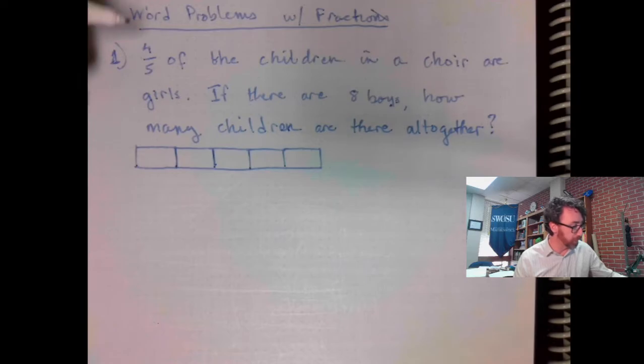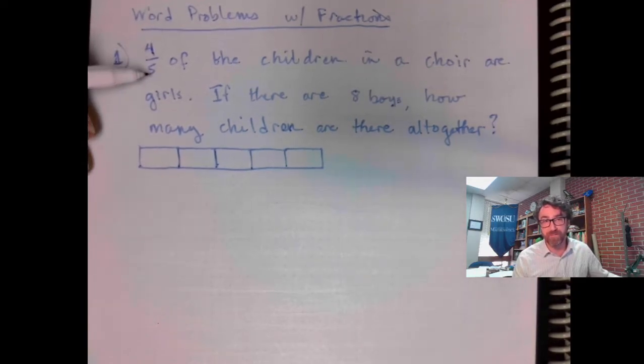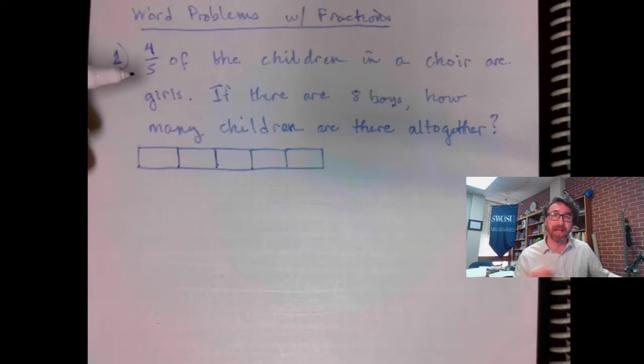The reason I'm doing that is because my fraction here is four-fifths. The denominator of the fraction I'm dealing with tells me how many pieces my bar diagram should have.